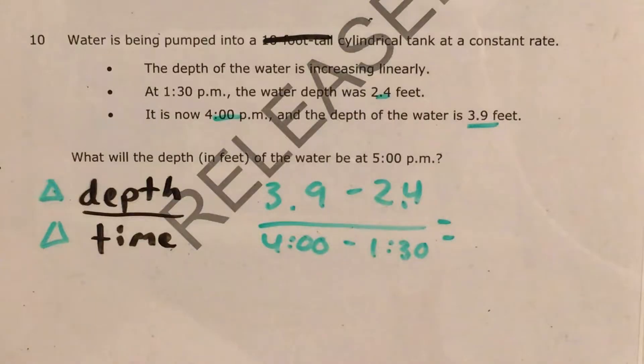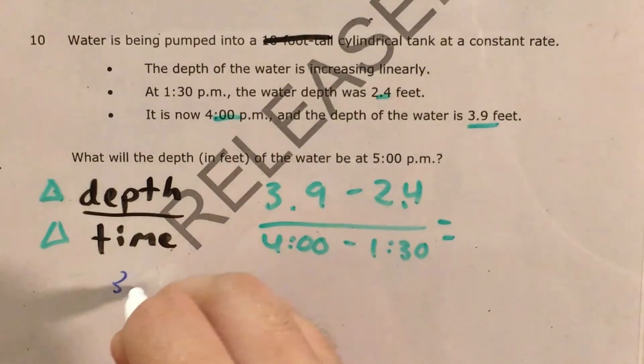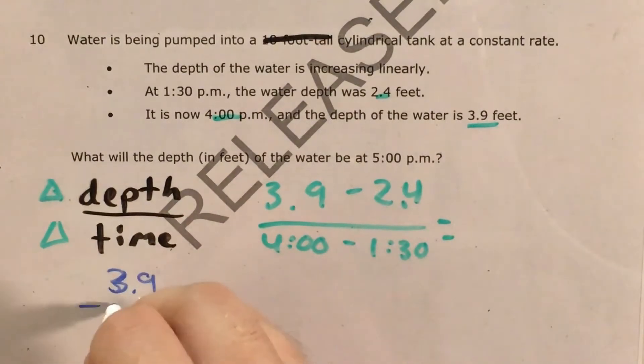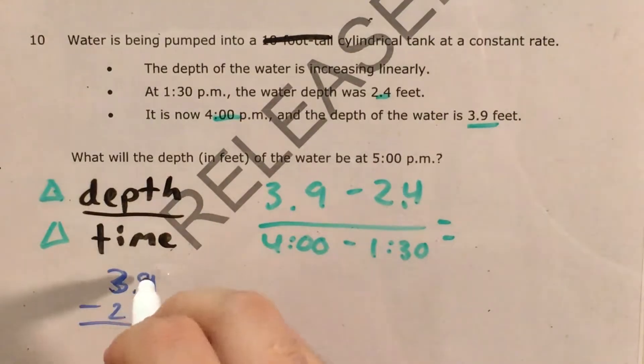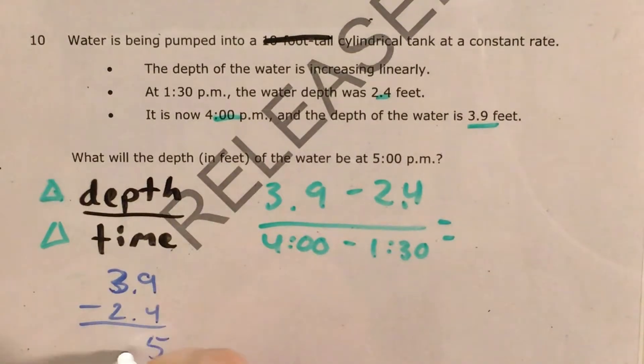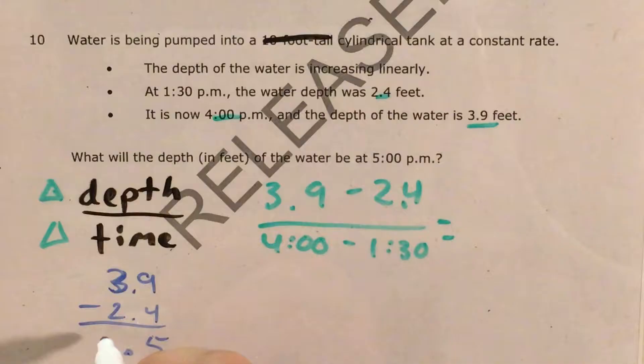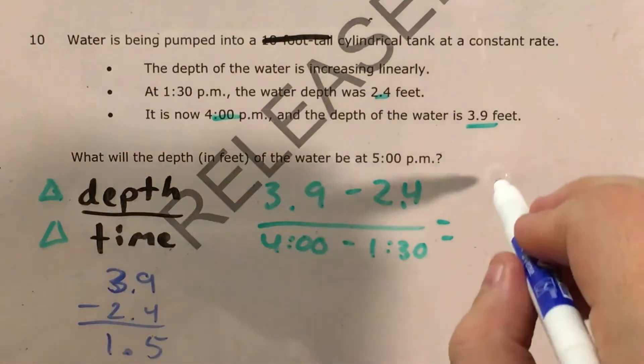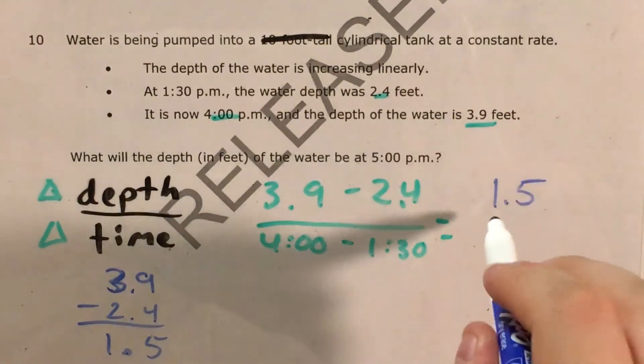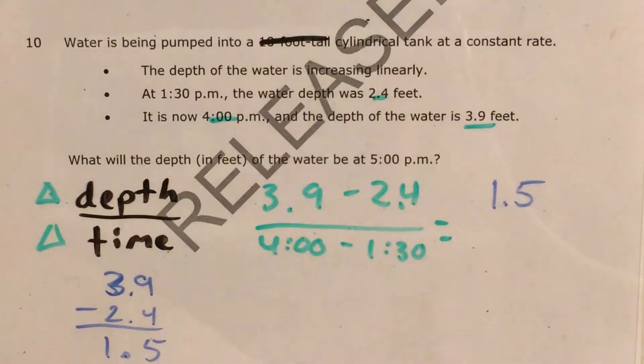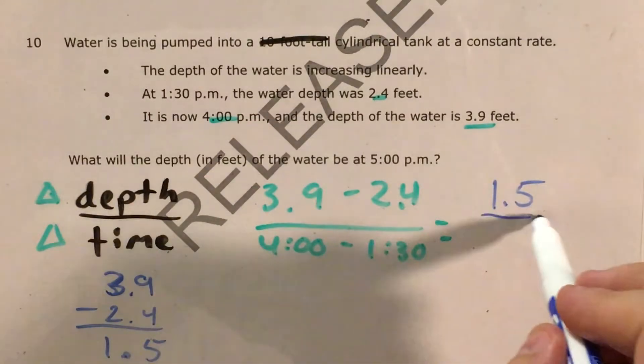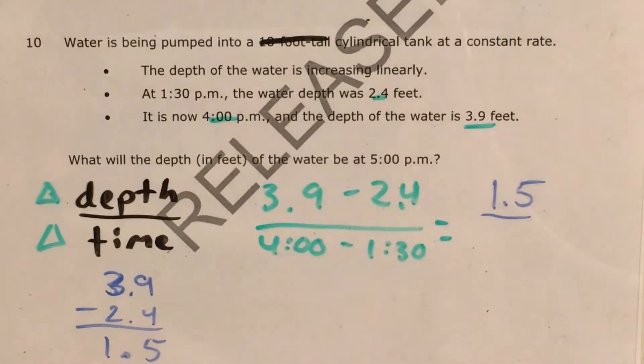3 and 9 tenths minus 2 and 4 tenths. 9 tenths minus 4 tenths is 5 tenths. 3 minus 2 is just 1. So this is 1.5 feet over the course of...